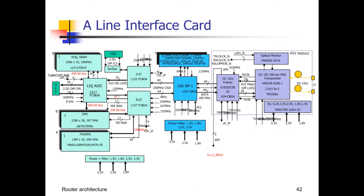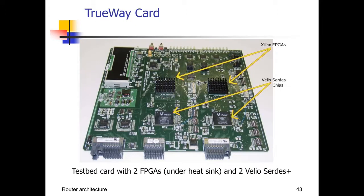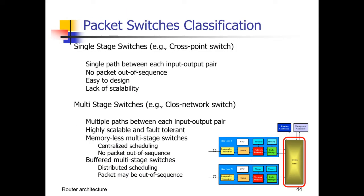A line interface card scheme shows a complicated logical block structure at the implementation level. You may recognize blocks like the transponder for managing the physical layer and the framer for layer-two functions. A picture of an actual experimental line card board is also shown. Finally, there is the switching fabric — the last component of the architecture — which needs to support transferring of multiple packets at the same time, having several inputs and several outputs.